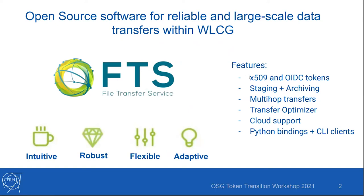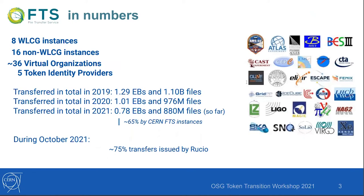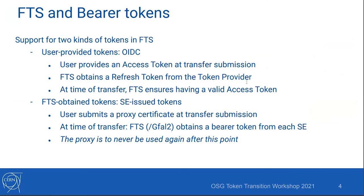A bit about FTS: probably the most important thing is that we are in the one exabyte total volume per year transferred, and we work in the one billion files per year range. We support 36 VOs — around 36 that we know of — and we also support right now five token identity providers, such as the WLCG IAM token provider. Since this is a presentation shared with Rucio, I recomputed for October 2021: about 75% of our transfers actually come from Rucio as the issuer.